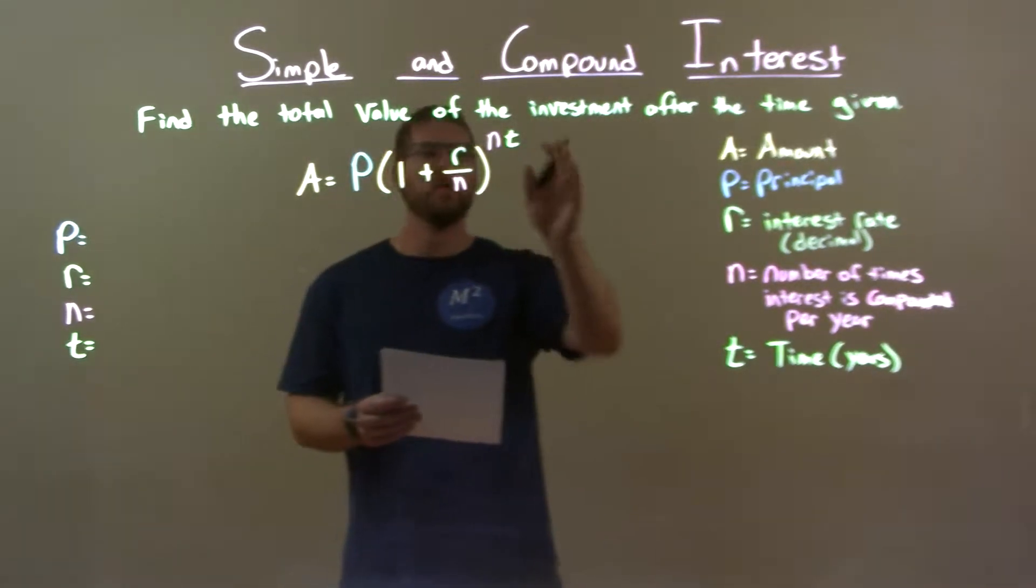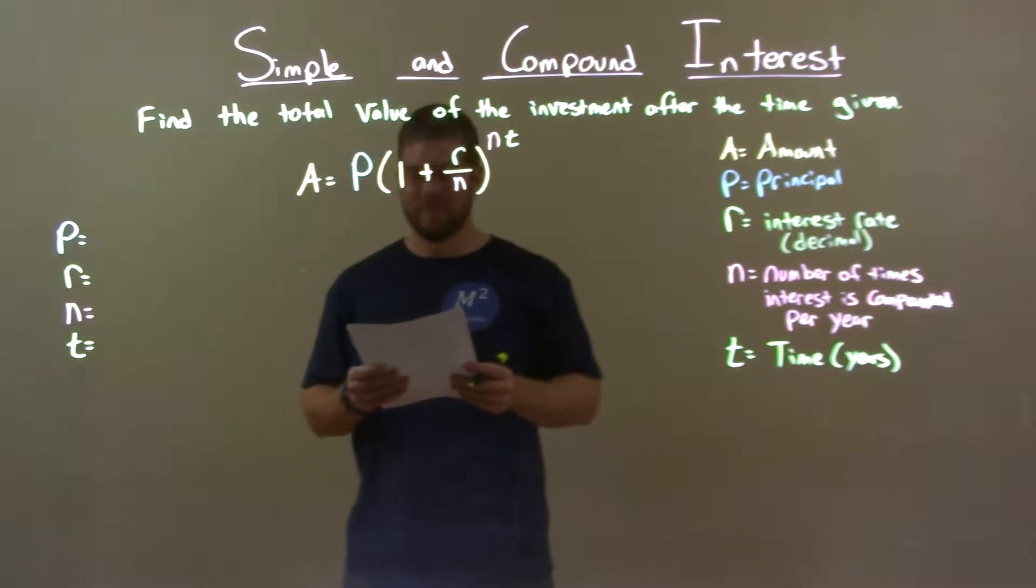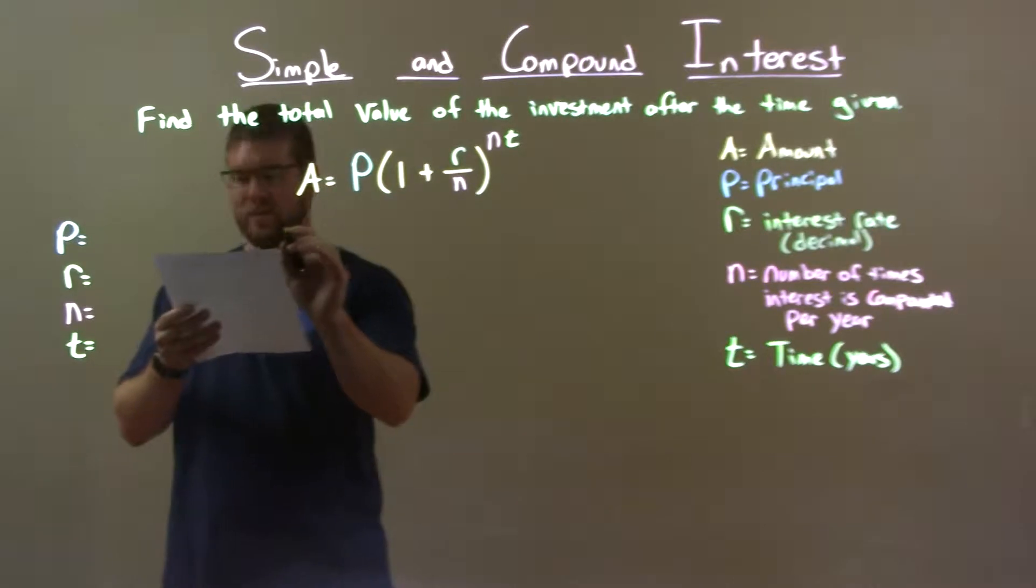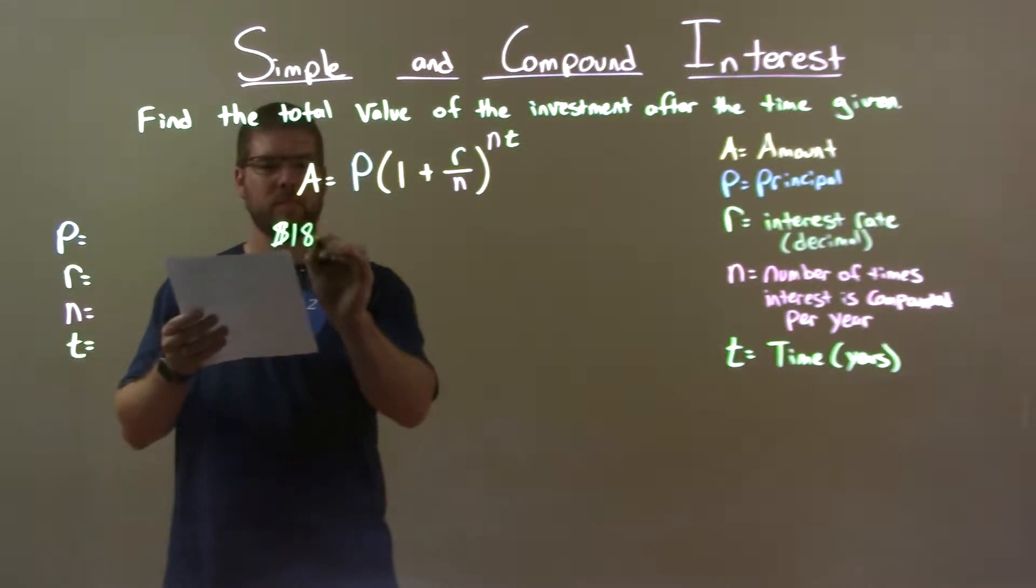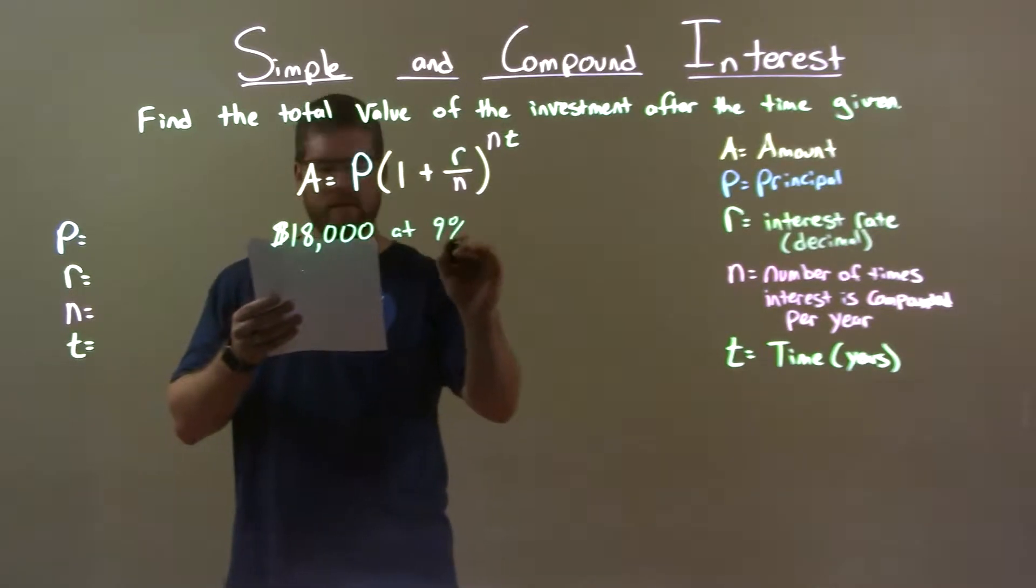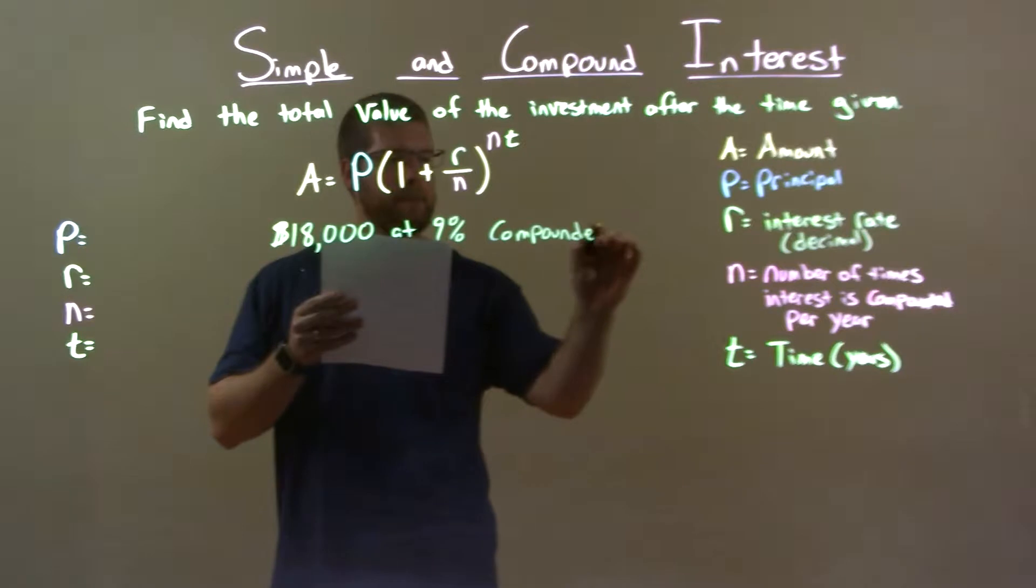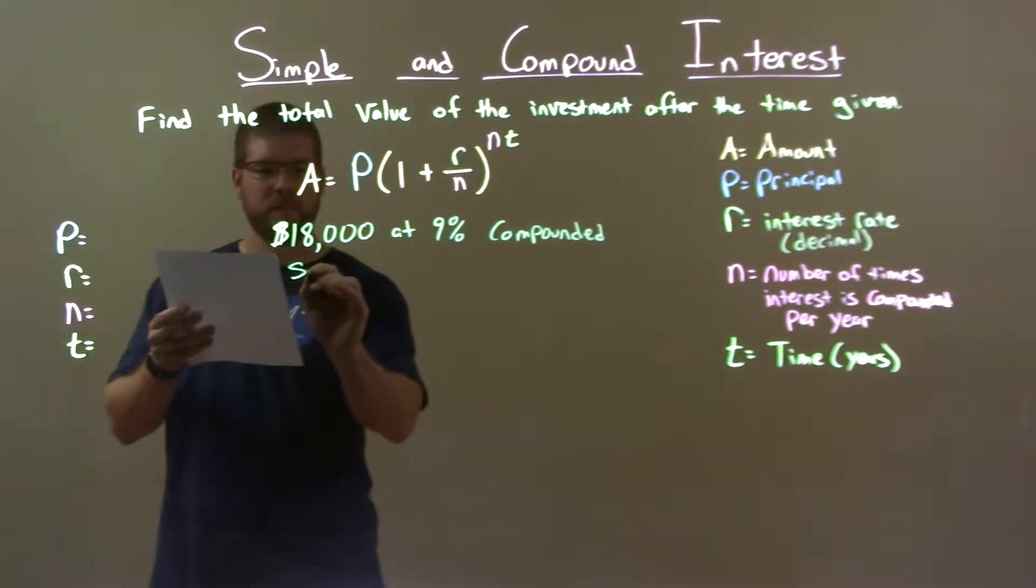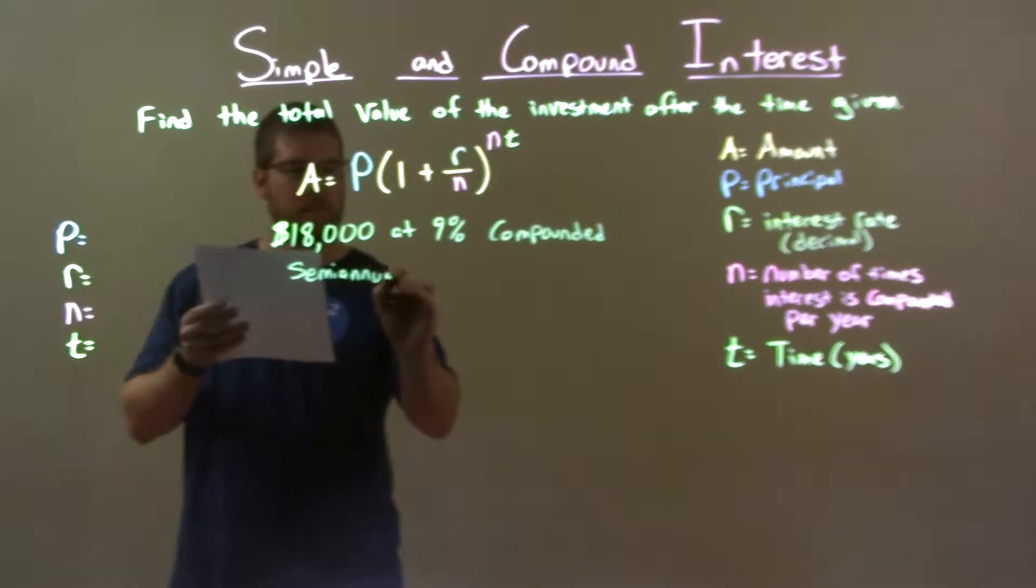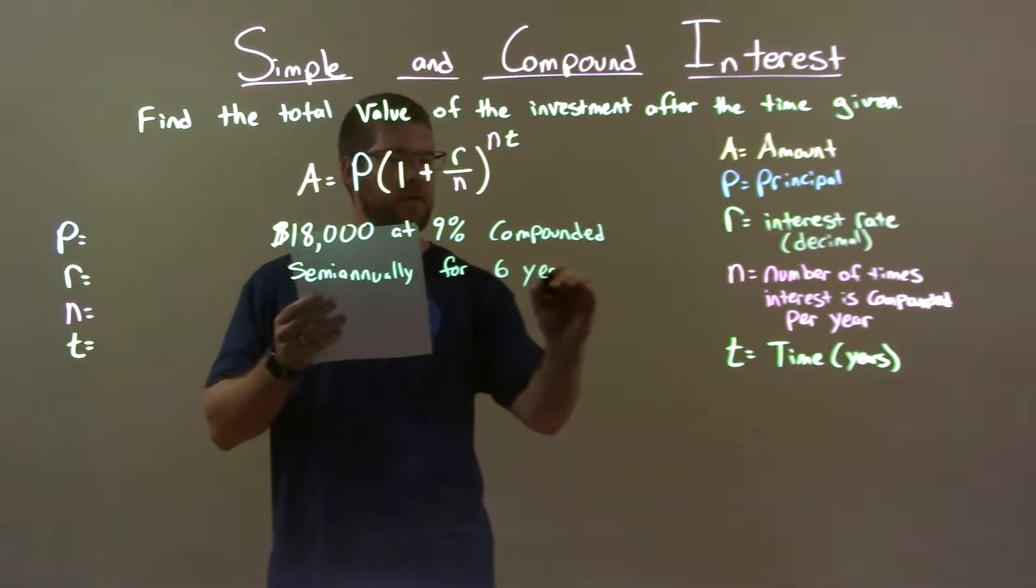Find the total value of the investment after the time given. If I was given this problem, $18,000 at 9% compounded semi-annually for 6 years.